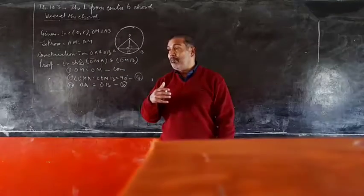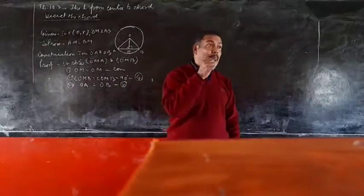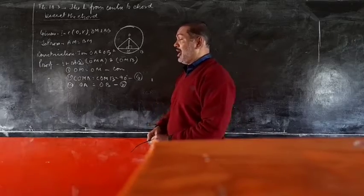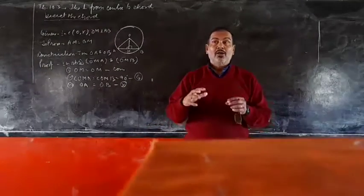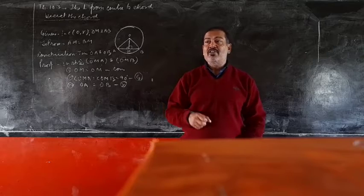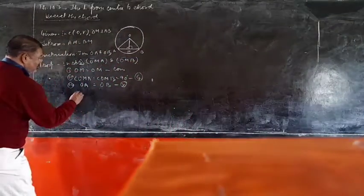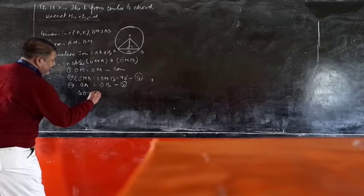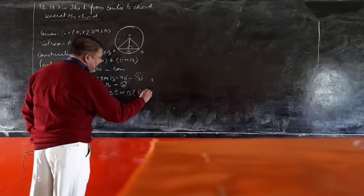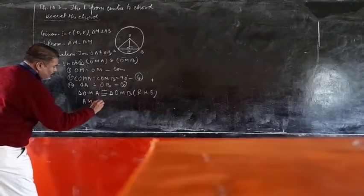So triangle OMA is congruent to triangle OMB by RHS congruence. Therefore we have proved that AM is equal to BM.